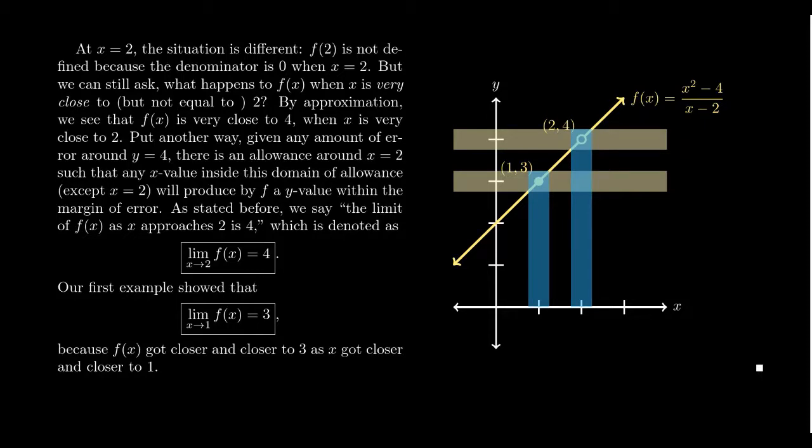Even though the function is undefined at x equals two, I can still look at the behavior of the graph near x equals two. That's what the idea of the limit was all about. We say the limit as x approaches two of f(x) is equal to four. As x gets close to two, f(x) will get close to four. It's also true that as x approaches one, f(x) will get close to three.